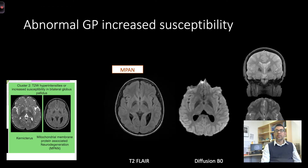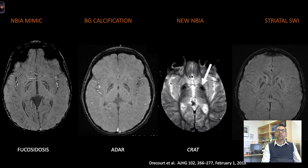Other than T2-weighted hyperintensities, some disorders grouped together in cluster two because they had increased susceptibility on MRI, and these included classic brain iron accumulation disorders like MPAN. It is important to note that a similar pattern can be noted in various other disorders, including NBIA mimics like fucosidosis, those with basal ganglia calcification, or those with other metal depositions that can lead to striatal susceptibility such as Wilson's disease.